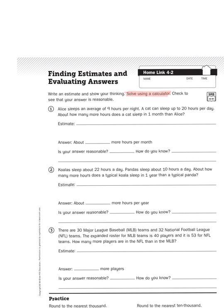Let's read problem number one. It says: Alice sleeps an average of nine hours per night. A cat can sleep up to 20 hours per day. About how many more hours does a cat sleep in one month than Alice? As a cat owner myself, I can attest that cats sleep a lot. 20 hours does seem like a lot, but if they're not scurrying about the house, my two cats are usually napping somewhere — catching a sunbeam, sleeping on the couch, trying to sleep in my favorite chair.